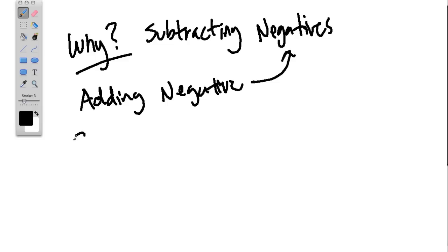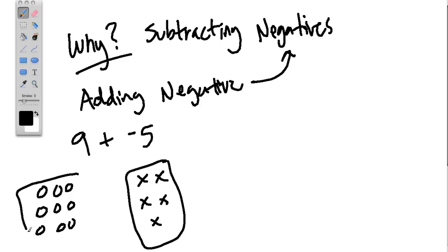Let's use the problem 9 plus negative 5. And to answer this problem, we can think of having this number 9, 9 beans, 9 cookies, something. We have 9 things. And then over here we have negative 5 and we're putting these things together. Well, negative 5, let's see if there's maybe x's, 5 x's. And we have these 9 chips, we're combining these two, this group with this group. That's what adding means, to combine two groups.